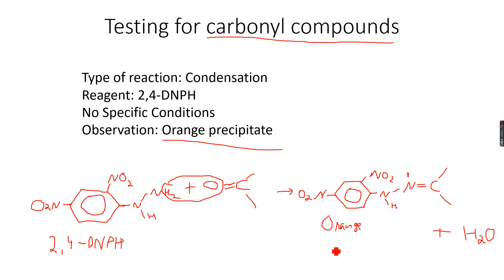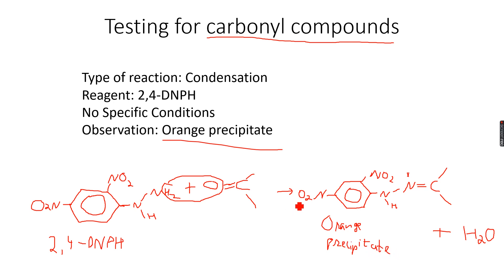The observation you will see is an orange precipitate, because the compound formed is called 2,4-dinitrophenylhydrazone. So 2,4-dinitrophenylhydrazine produces 2,4-dinitrophenylhydrazone - an orange precipitate. You don't have to learn all these names. What you need to learn is the observation: if the compound you are testing is a carbonyl compound, it will give an orange precipitate with 2,4-DNPH - be it an aldehyde or a ketone.